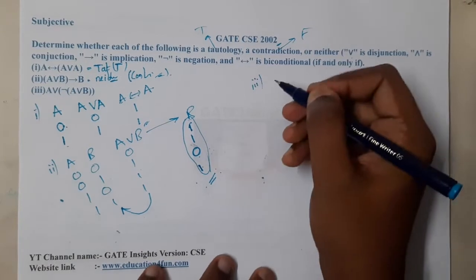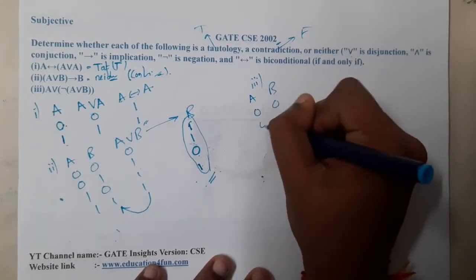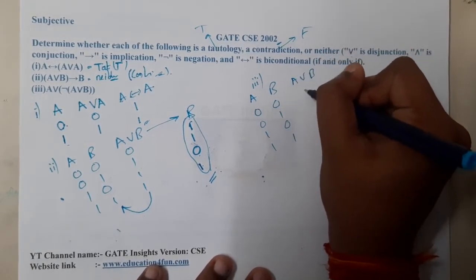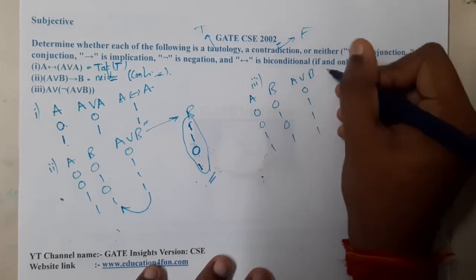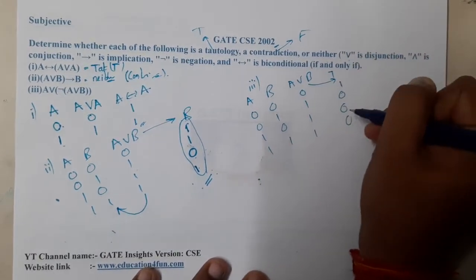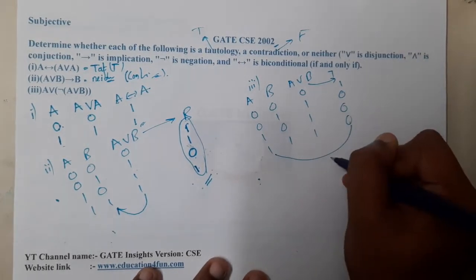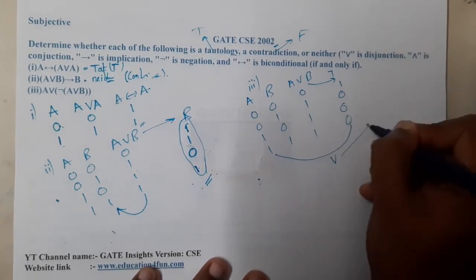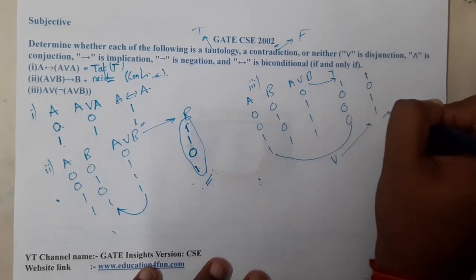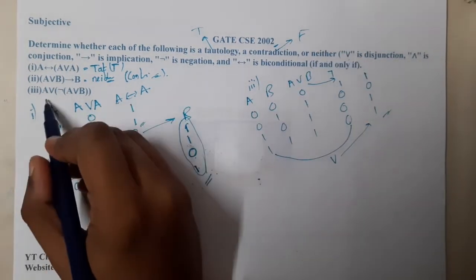This is option two, so now let's move to option three. We are having A B again: zero zero, zero one, one zero, one one. A or B is nothing but zero one one one. Now I need to apply negation for this, it is one triple zero. Now I need to apply in between these two, we are applying OR operation. After applying OR, the result will be zero zero one one.